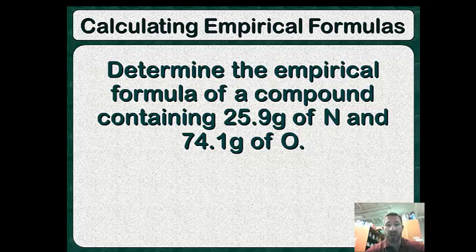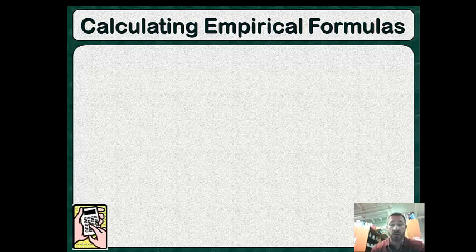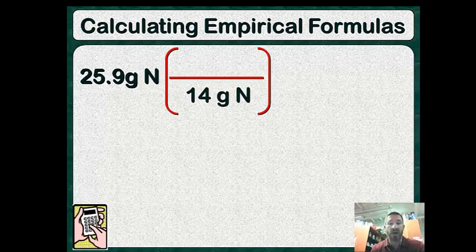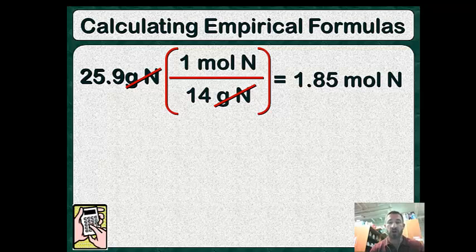Let's do a quick empirical formula problem for review. Determine the empirical formula of a compound that contains 25.9 grams of nitrogen and 74.1 grams of oxygen. Notice these are not percentages — we go straight from these masses. First, change grams to moles. We put 25.9 grams of nitrogen and divide by the molar mass of nitrogen, which is 14 — not 28, because nitrogen here is in a compound, not by itself. One mole goes on top. Grams of nitrogen cancel out, giving us 1.85 moles of nitrogen.